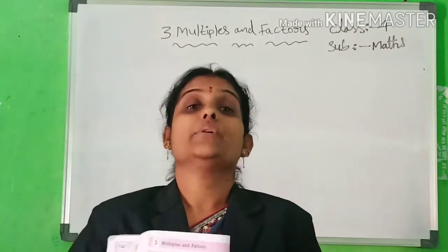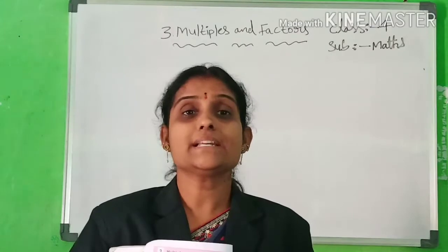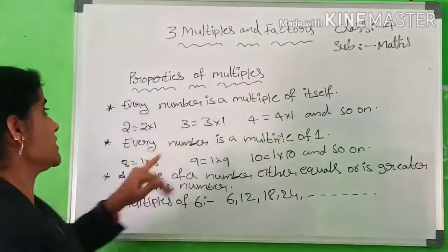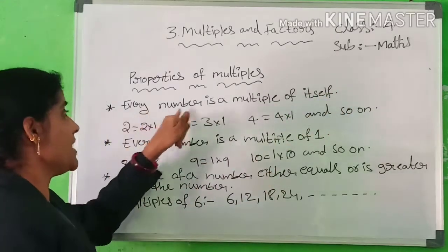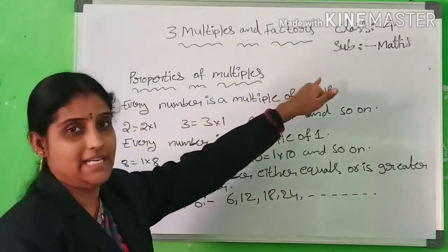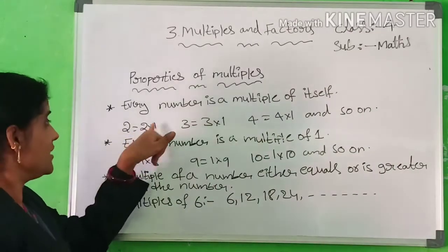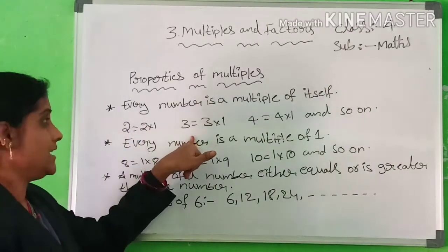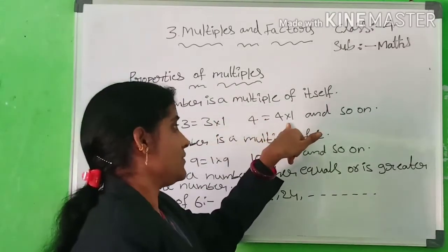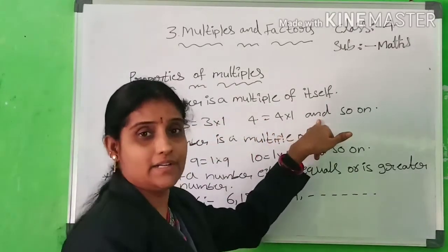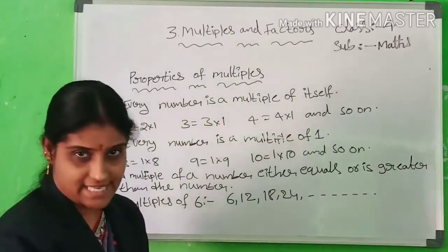Today we are going to learn properties of multiples. Property one: every number is a multiple of itself. For example, 2 = 2×1, 3 = 3×1, 4 = 4×1, and so on.